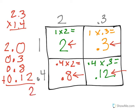And then I am going to add. 2 plus nothing is 2. 3 plus 8 makes 11, plus 1 more would make 12. We would put our 2 on the bottom, our 1 on the top. And then 1 plus 2 would equal 3. So my product would be 3.22.